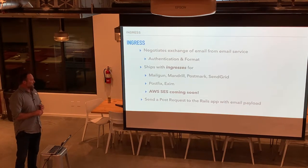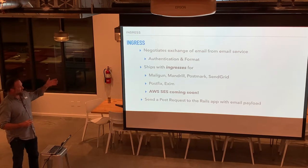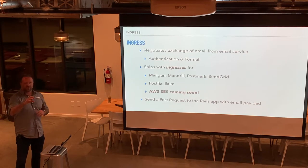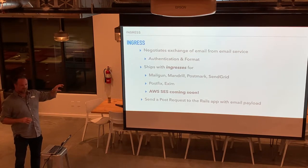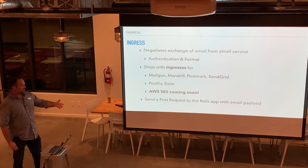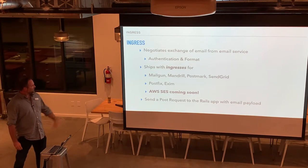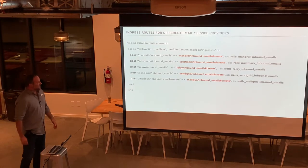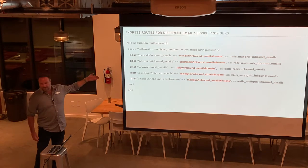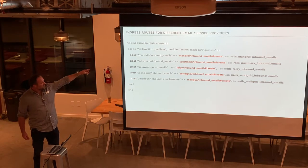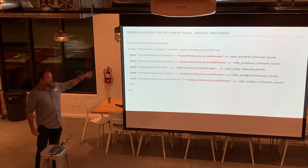The ingresses — every email service is going to send a POST request to your Rails app a little differently, so these ingresses are created to negotiate that exchange. Ultimately it comes down to a POST request to your app with a payload. These are the routes that are drawn — you can see they create the inbound email create action, and it's going to be different depending on your email service provider. They had Amazon Simple Email Service but took it out; supposedly it's coming back in the next release.